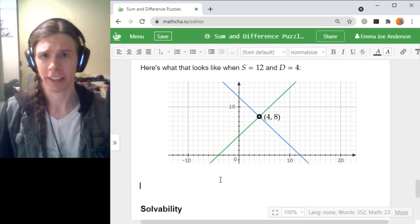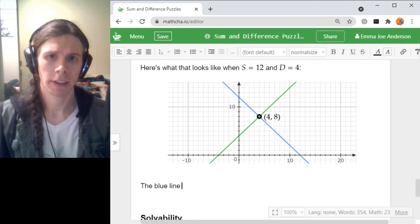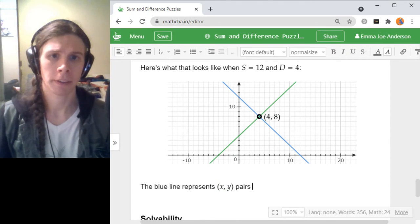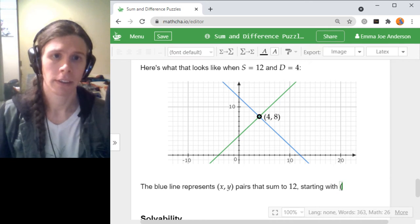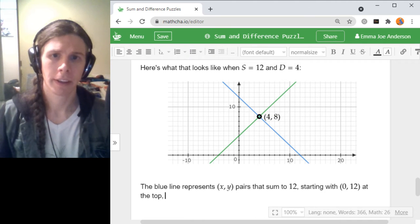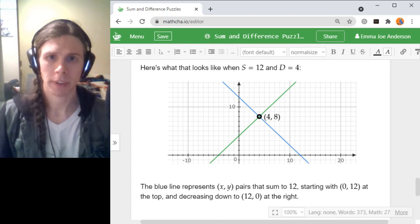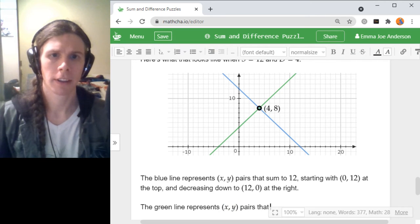And I'll add the captioning that I just described verbally. The blue line represents x, y pairs that sum to 12, starting with 0, 12 at the top and decreasing down to 12, 0 at the right. The green line represents x, y pairs whose difference is 4.